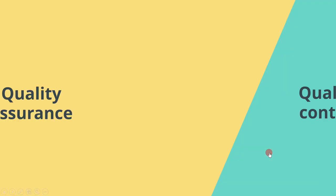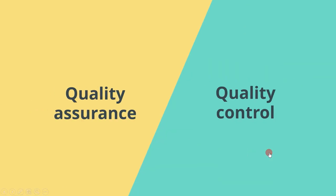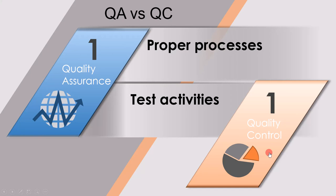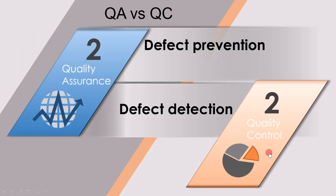Now let's see the main differences between quality assurance and quality control in more detail. The first main difference is that quality assurance contains proper processes, while quality control has test activities. Quality assurance contains theoretical concepts; quality control is practical. The second main difference is that quality assurance is more about defect prevention — by laying out guidelines in documents, this helps prevent defects. Quality control, on the other hand, is a defect detection mechanism, where different test techniques are used to detect defects.